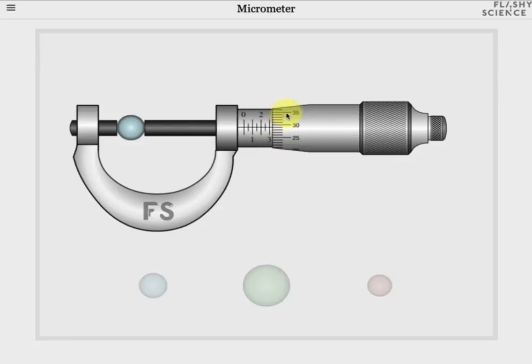Then use the fine scale to find the additional hundredths of a millimeter to add. Find the fine scale tick that most closely aligns with the main scale—here this is 29, so 0.29 millimeters. Add this to the 3.0 millimeters to get the sample width: 3.29 millimeters.